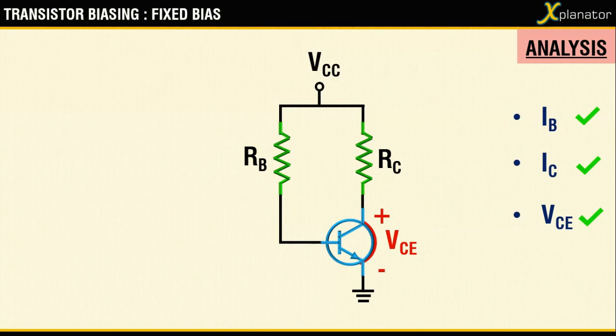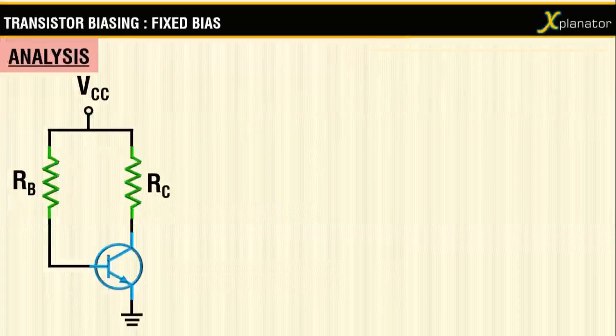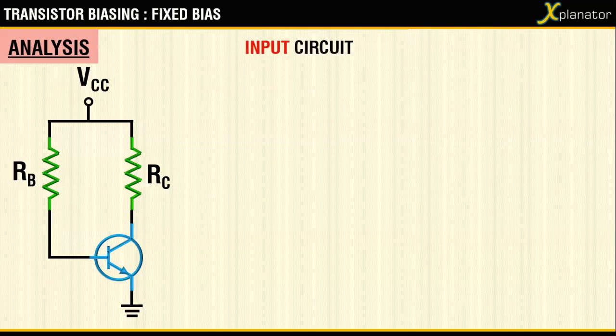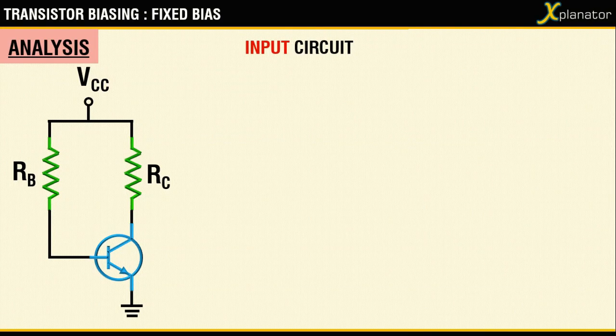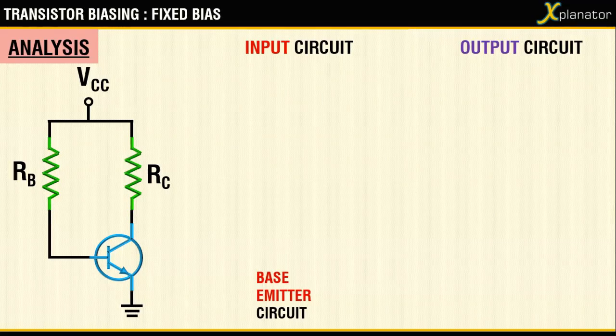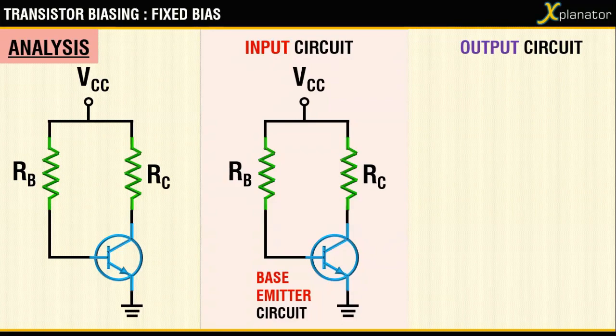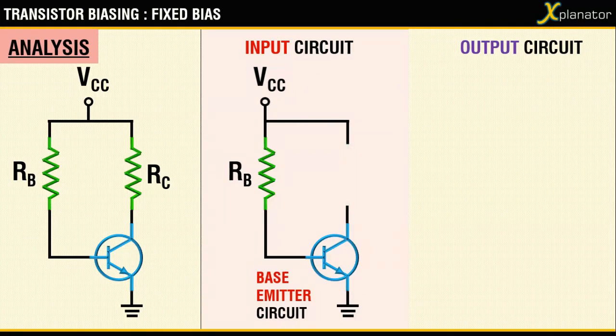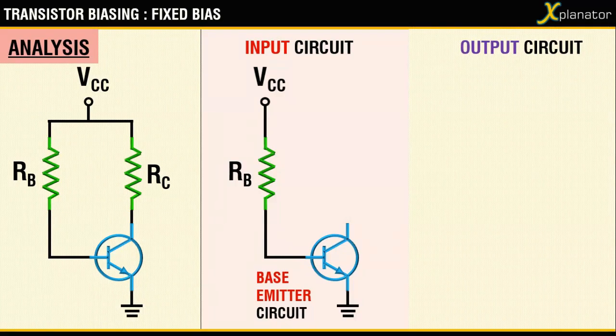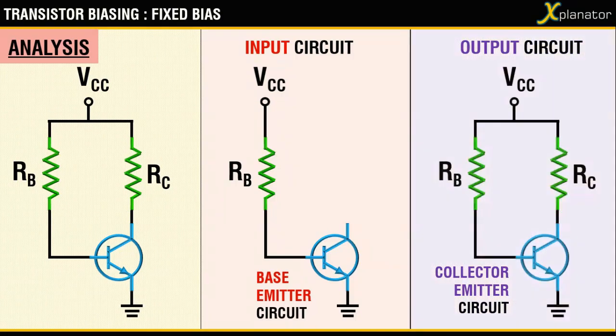Now to start with the analysis, we will have to divide the circuit into two parts: one is the input circuit, the other is the output circuit. The input circuit is also called the base-emitter circuit. It can be constructed by shifting the VCC to the base side and eliminating the collector resistance and the connecting cables. The output circuit, which is called the collector-emitter circuit, can be built by shifting the VCC on the collector side, eliminating the base resistance and the connecting cables.